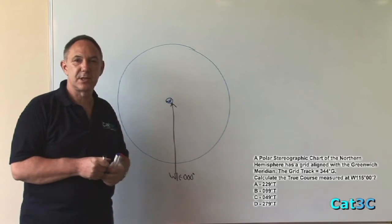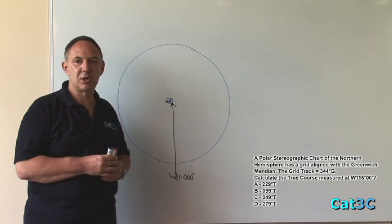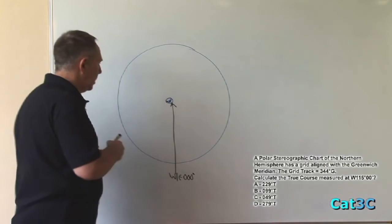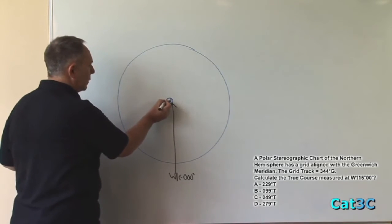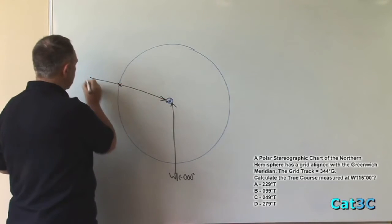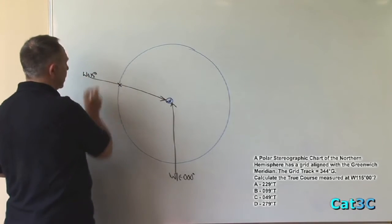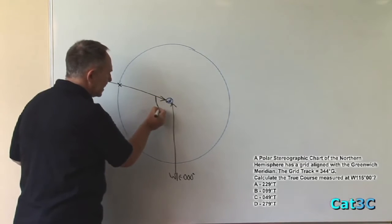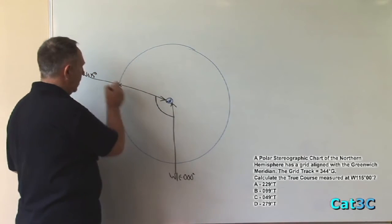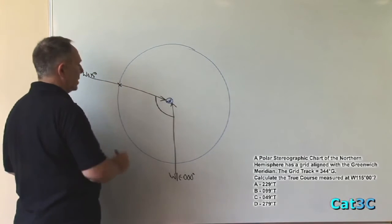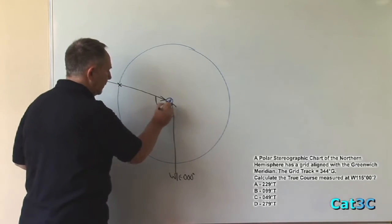Now the question asks us for the value of the true course measured at west 115 degrees. So if I plot in west 115 degrees as the local meridian, I know that this angle between west east 0 and the Greenwich Meridian and west 115 is 115 degrees.